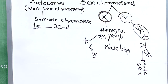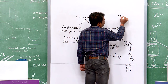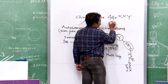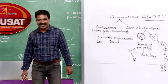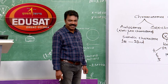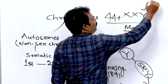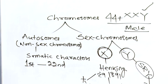Y chromosome is the sex-determining chromosome. Presence or absence of Y chromosome determines sex. For example, an individual with genotype 44+XXY has two X chromosomes and one Y chromosome, but the individual is male. If the Y chromosome is present, the individual is definitely male; if absent, that individual is female.